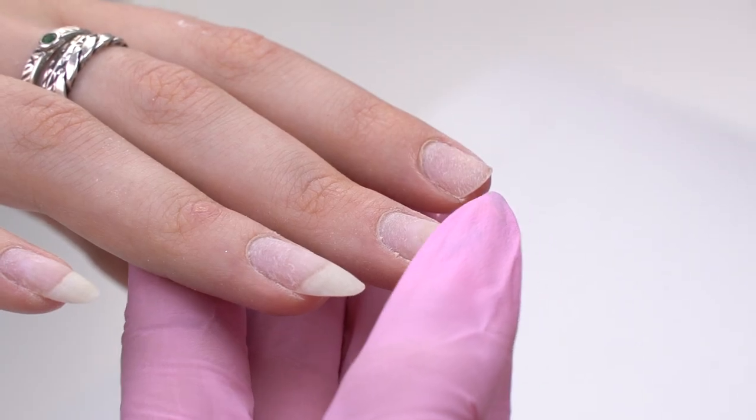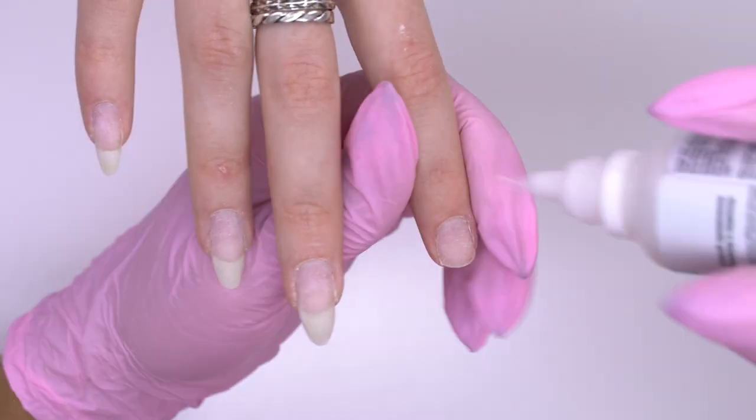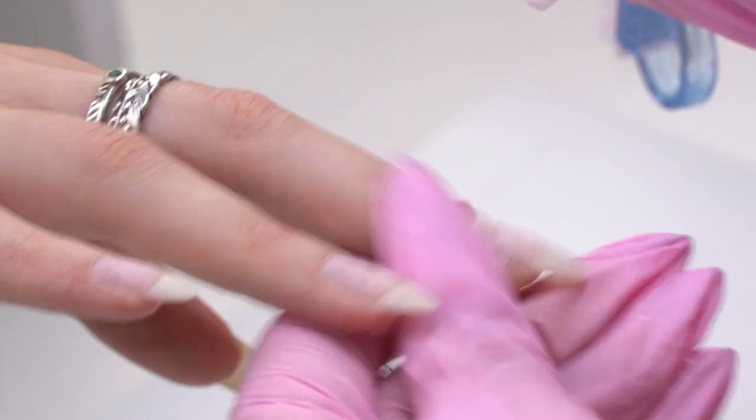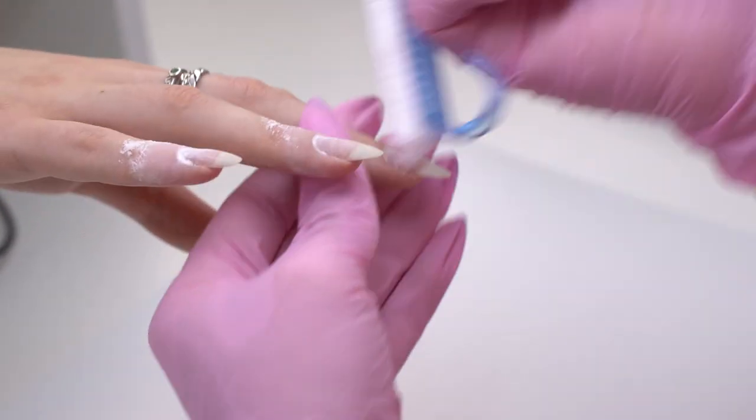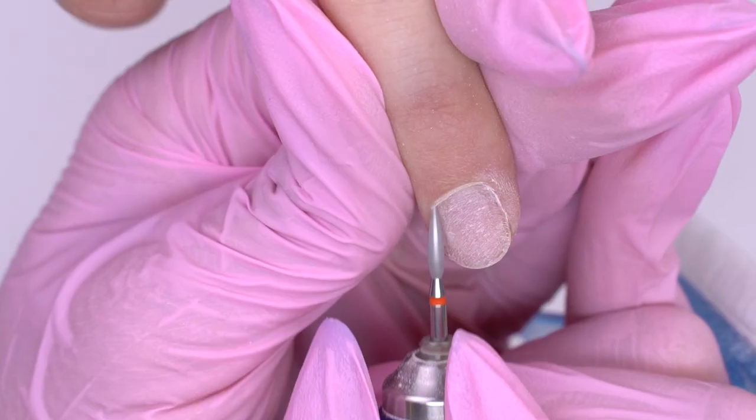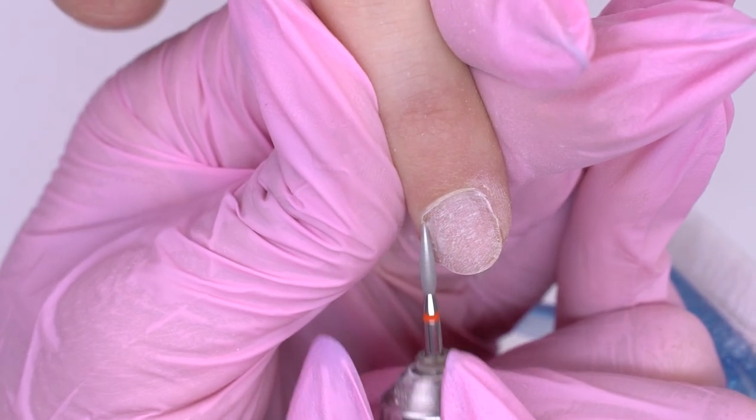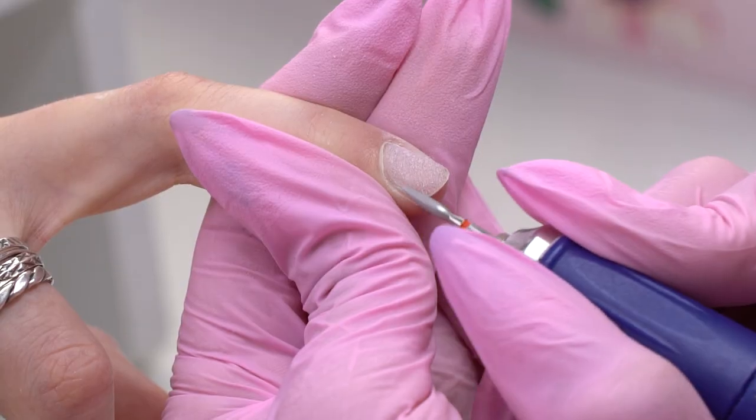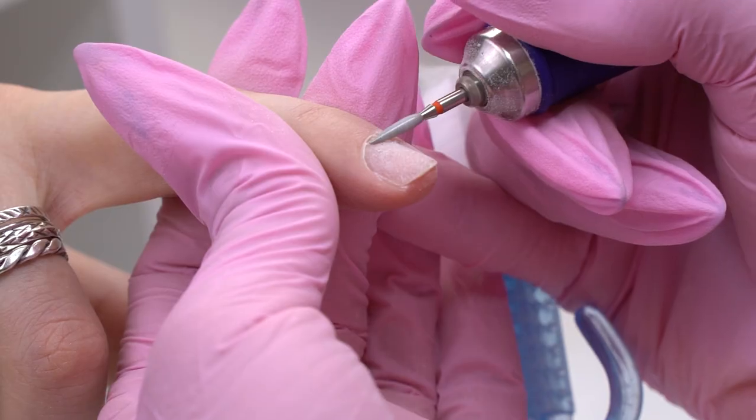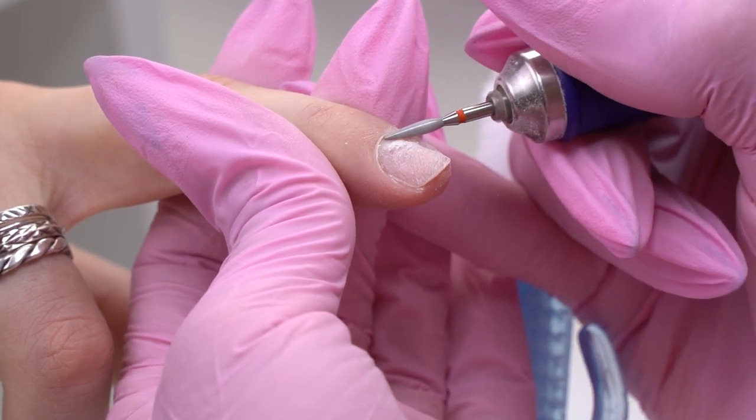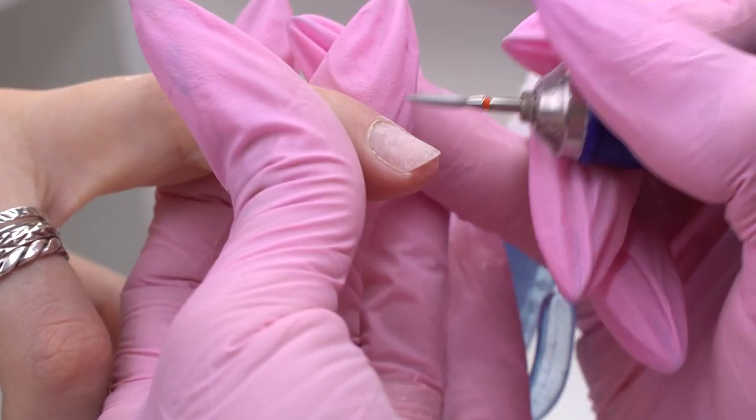Before using an e-file, I apply some powder to dry up my model's wet cuticle. I brush it off and lift up the cuticle with a diamond flame drill bit. Working with wet cuticles, we should always use red drill bits and carefully process the sinuses to avoid cuts.